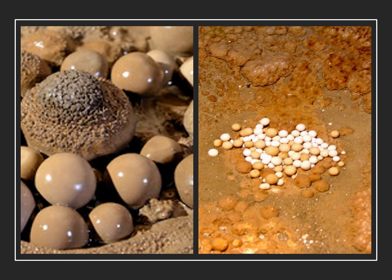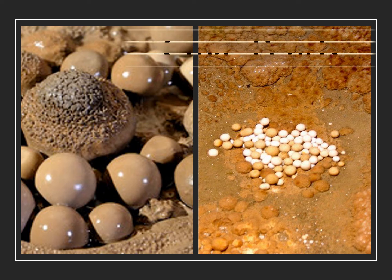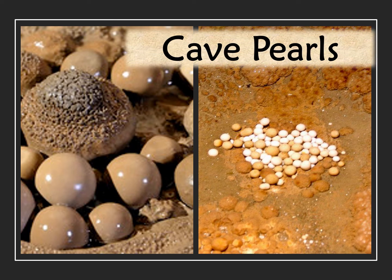One of the most interesting types of speleothems is also one of the rarest — cave pearls. They generally have a nucleus, which could simply be a grain of sand. Concentric layers of calcite surround the nucleus, laid down in much the same way as layers are deposited on an oyster pearl.